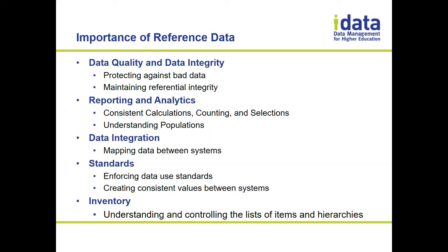Having consistent values between systems simplifies integration, generates institutional standards, and makes reporting easier. For example, if one report from your LMS talks about 'active students' and another talks about 'registered students' but those mean the same thing, keeping those codes consistent resolves that confusion. Finally, the fifth area is the concept of inventory — being able to control lists of things like your catalog values or GL numbers, and managing the hierarchies between them with some sort of governance.